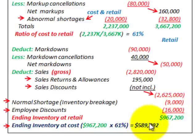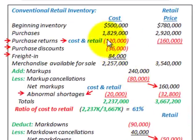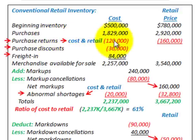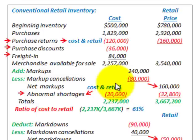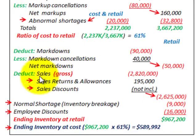To recap the special items: Purchase returns and allowances reduce both the cost and retail price columns. Purchase discounts reduce only the cost column. Freight in adds to cost only. Abnormal shortages reduce both the cost and retail price columns. Sales are entered at gross, and sales returns and allowances are added back to the retail price only — not cost. Sales discounts are excluded from both columns.